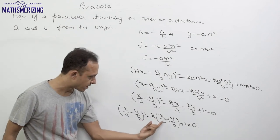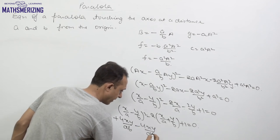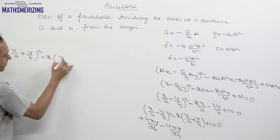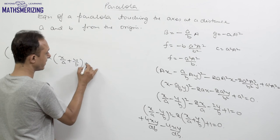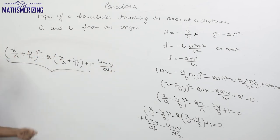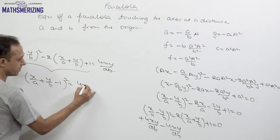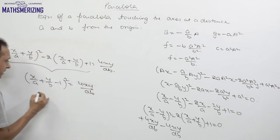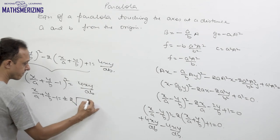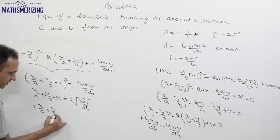Now we try to make it a perfect square of (x/a + y/b). We add and subtract 4xy/(ab): (x/a + y/b)² − 2(x/a + y/b) + 1 − 4xy/(ab) = 0, moving the −4xy/(ab) term to the right-hand side to get 4xy/(ab). This gives the perfect square (x/a + y/b − 1)² = 4xy/(ab).